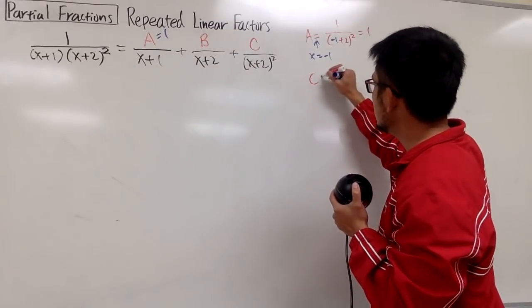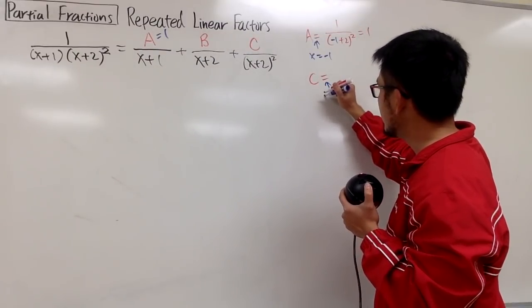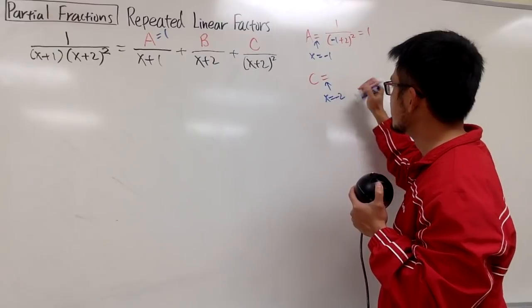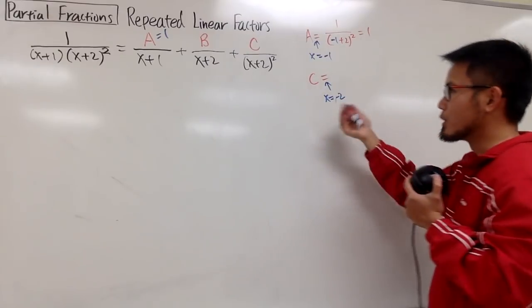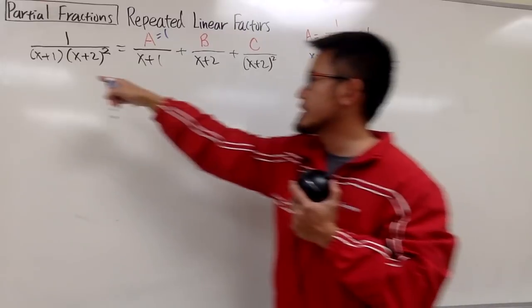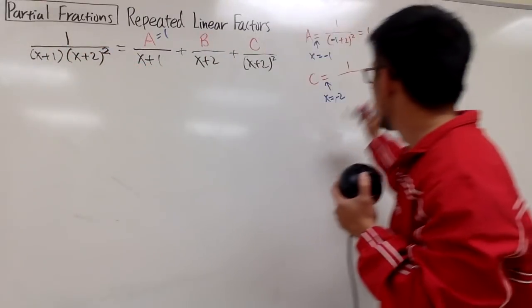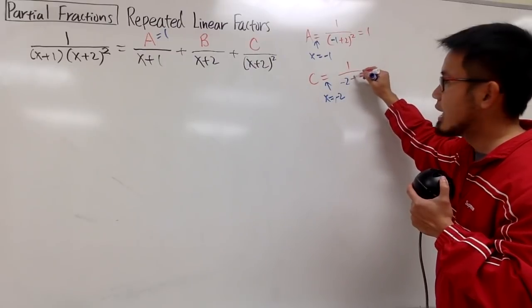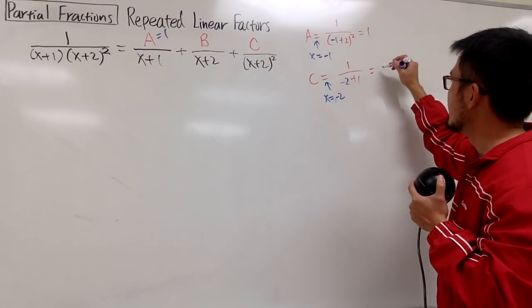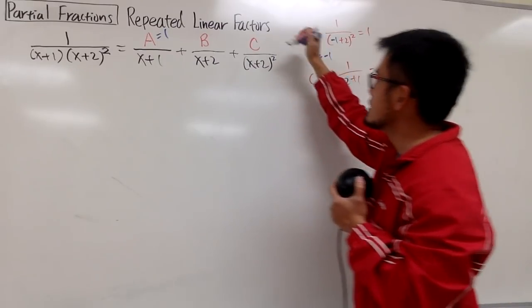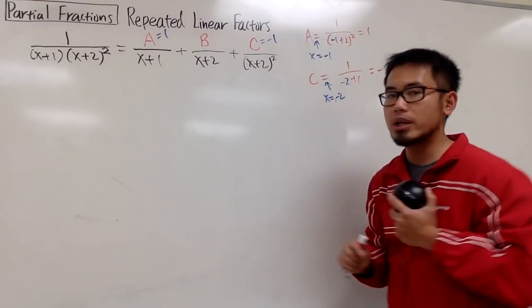So I'll just put this down. c is equal to the situation where you let x equal to negative 2. So in this case, I will work this out for you guys. It will be 1 over plugging negative 2 into the remaining part. Negative 2 plus 1, which is 1 over negative 1, which is negative 1. And we get a c value right away as well.